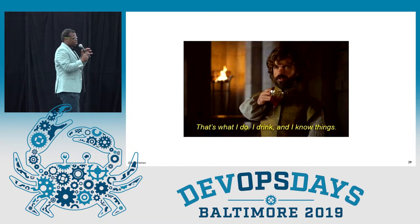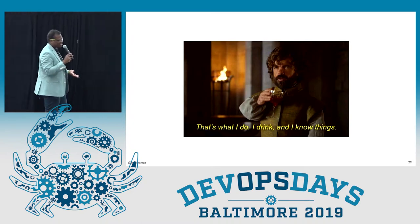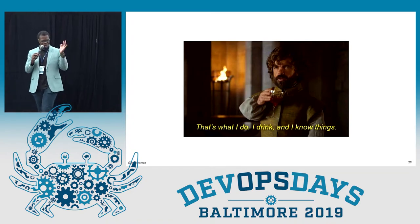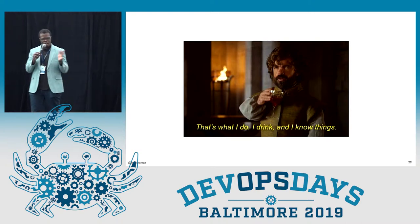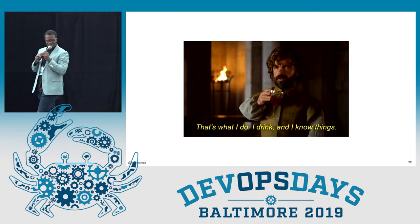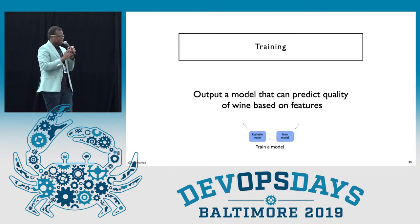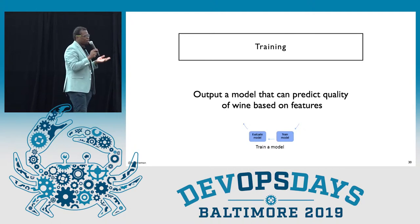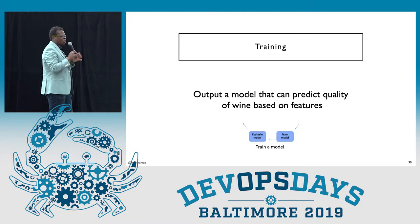Pretty much — I drink and know things. That's what it comes down to about this data generation: you know everything about your data before you go to the next step. Training is the next step, and it's pretty much to output a model from data that can predict the quality of wine based on the features.